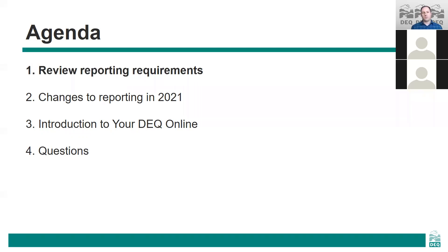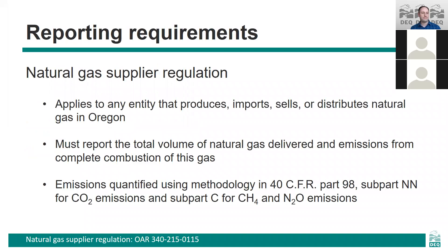To start, we're going to go over what the reporting requirements are. The greenhouse gas reporting for natural gas suppliers covers emissions from all natural gas supplied in Oregon, and entities must report the total volume of natural gas delivered within the state except where that gas is delivered to another natural gas supplier such as a local distribution company.